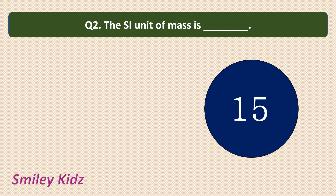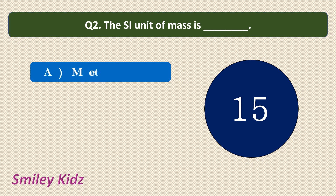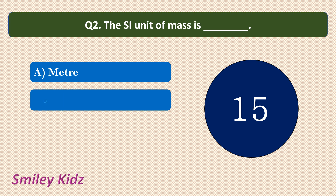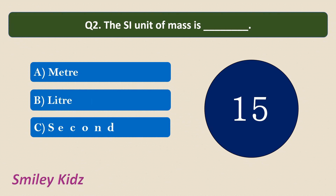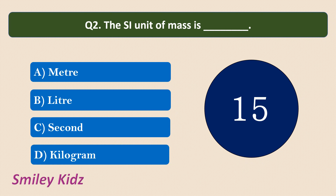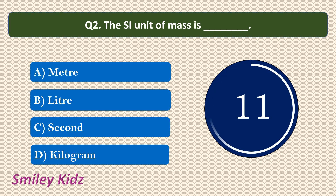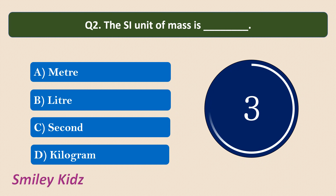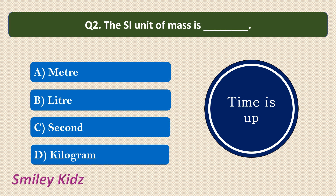Moving to the second question: The SI unit of mass is — options are: Meter, Liter, Second, Kilogram. Your time starts now. Your time is up. The correct answer is Kilogram. The SI unit of mass is Kilogram.